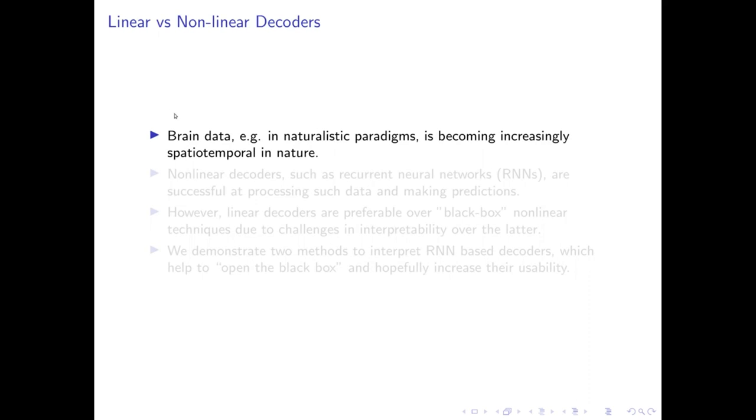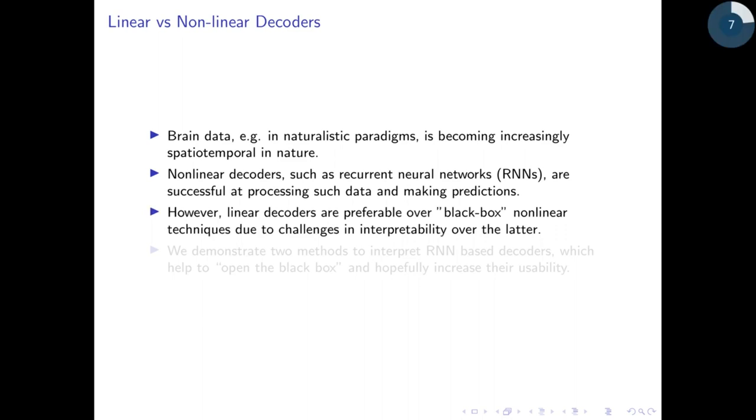Brain data, for example in naturalistic paradigms, are becoming increasingly spatiotemporal. For such datasets, nonlinear decoders such as recurrent networks are becoming successful in decoding tasks. However, linear decoders are often preferred over these black box nonlinear techniques due to challenges in interpretability.